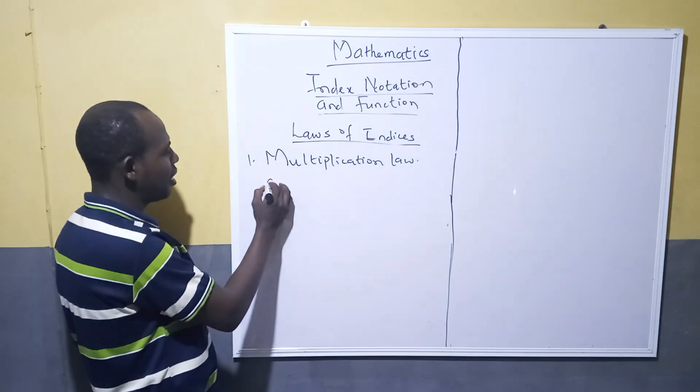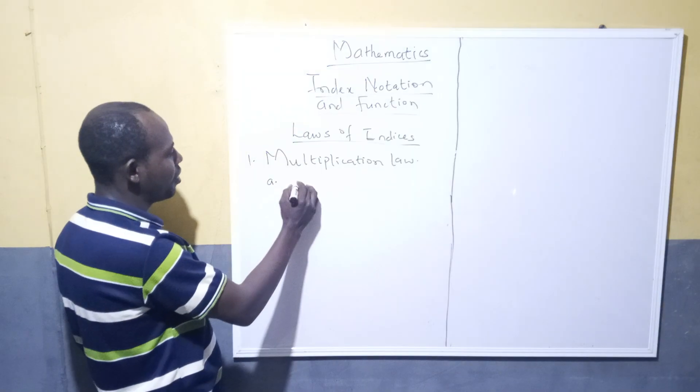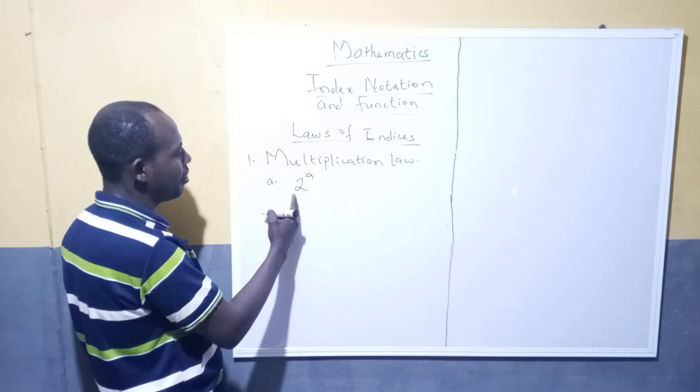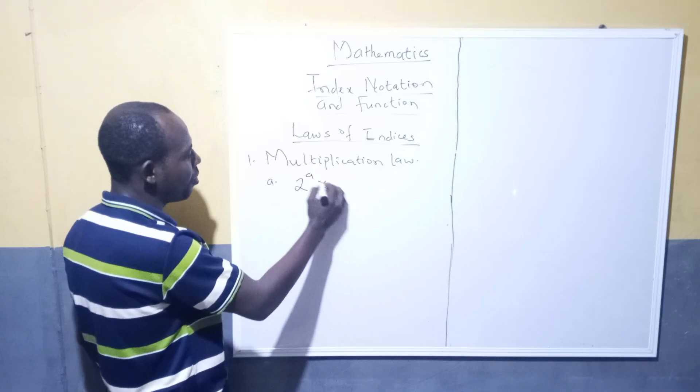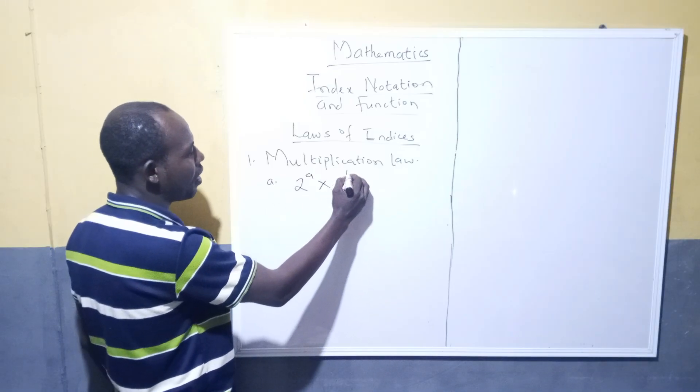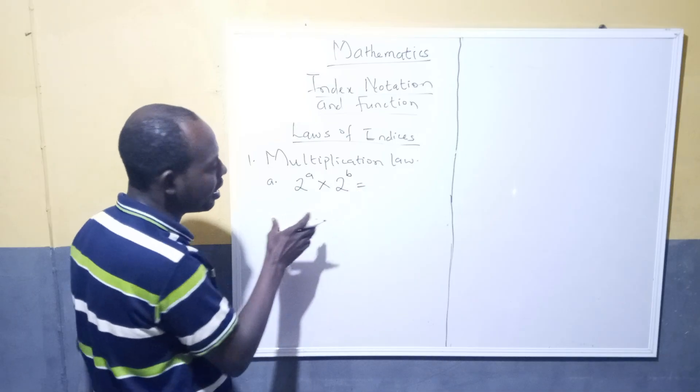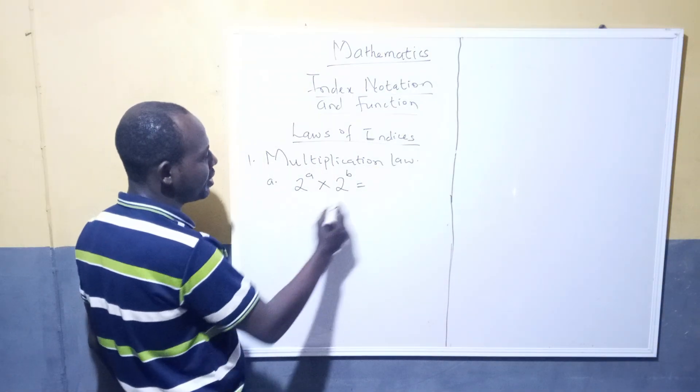For example, let's take an example. We have a base a to power of a multiplied by base a to power of b. Then to get the answer to this question, take one of the bases which is a, then add your power a plus b.